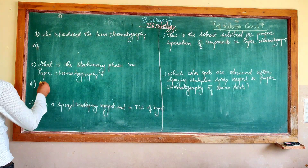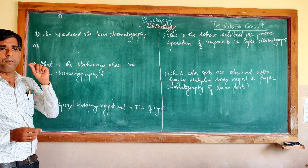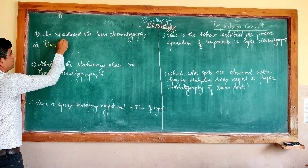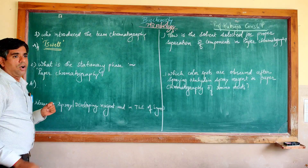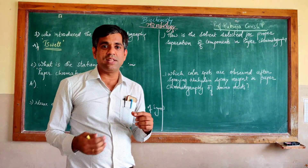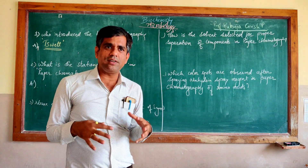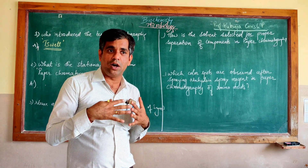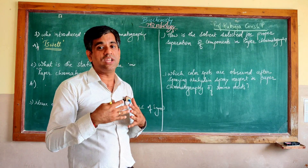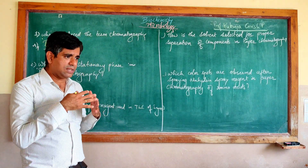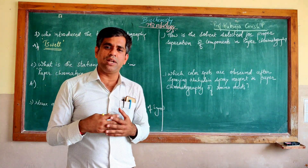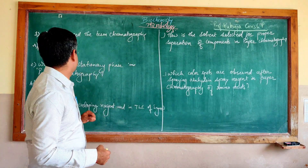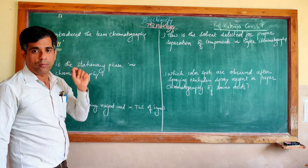Who actually introduced this particular term? It was a Russian botanist called Svet who introduced the term chromatography, which actually means colored writing. He used this term to describe the method of separating plant pigments on a column of alumina. When he was separating these plant pigments on the column of alumina, it appeared like writing with colors.